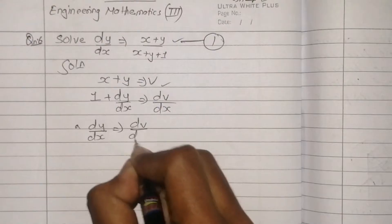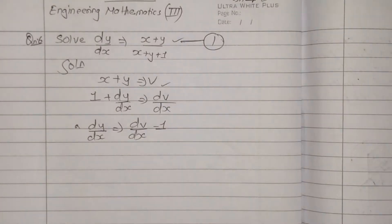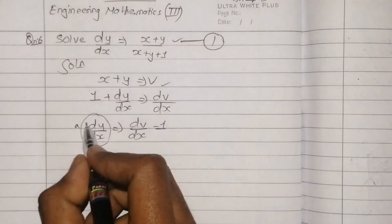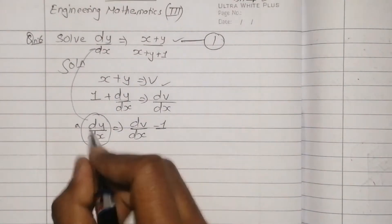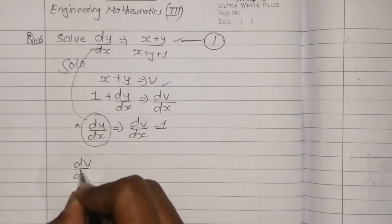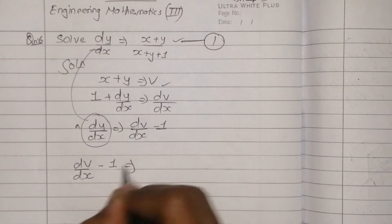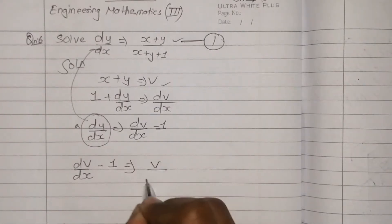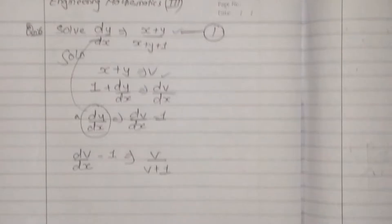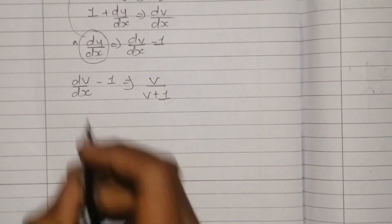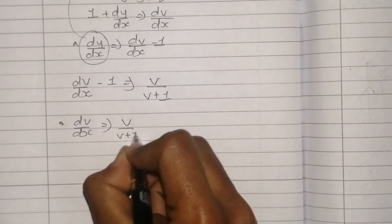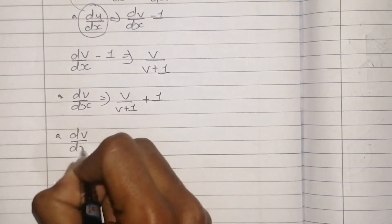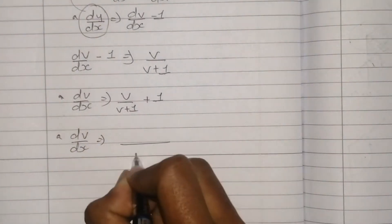Let v = x + y. Putting the value, dv/dx minus 1 equals dy/dx. So dv/dx minus 1 is equal to v upon (v + 1). Therefore dv/dx is equal to v upon (v + 1) plus 1.